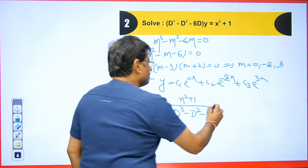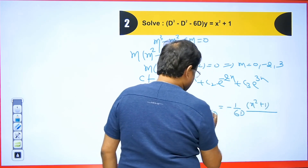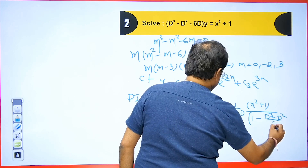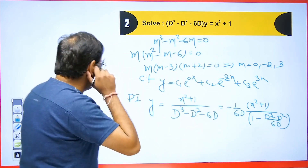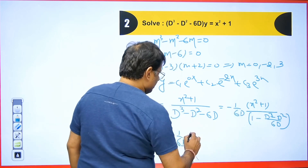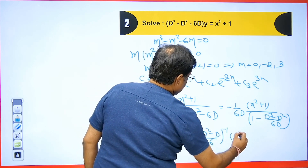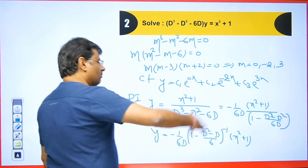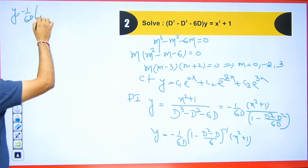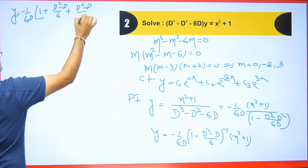For the PI: y equals (x square plus 1) over (D cube minus D square minus 6D). There is no constant term, so we take minus 6D common. This gives x square plus 1 over (minus 6D) times (1 minus (D square minus D) upon 6). Taking minus 6D to the front: y equals minus 1 upon 6D times (1 minus (D square minus D)/6) inverse into (x square plus 1). Since both signs are minus, all terms in the expansion become plus.